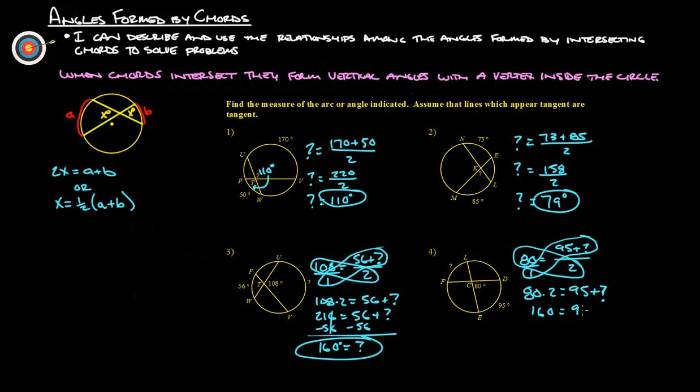And then we take 95 plus question mark, subtract 95 from both sides, and we get that question mark equals 65 degrees. So this arc right here has to be 65 degrees.